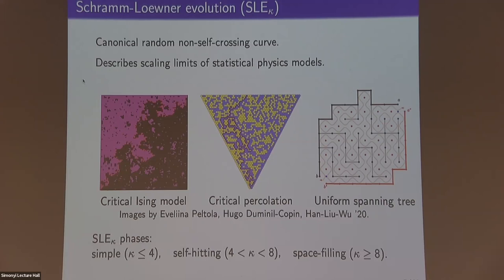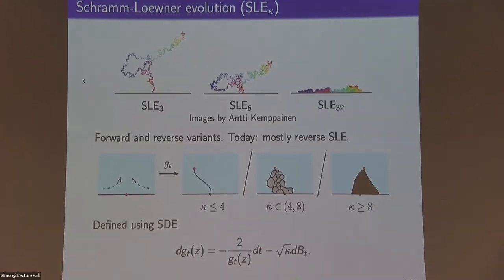SLE has three different phases. When kappa ≤ 4, you get a simple curve. When kappa is strictly between 4 and 8, you get a curve which is self-intersecting but not crossing itself. When kappa ≥ 8, you get a space-filling curve. Here are some simulations: SLE_3 is simple, SLE_6 is self-intersecting, SLE_{32} is space-filling.